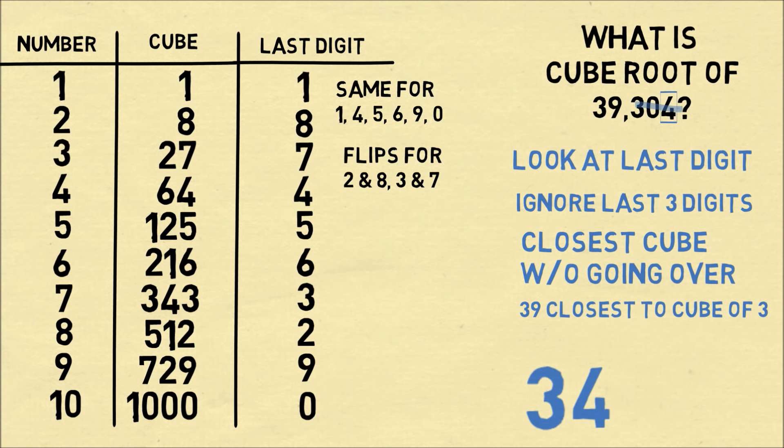That gives us the other part of our answer, which is 3. So here we have it. We put the numbers together, and 34 is the cube root of 39,304.